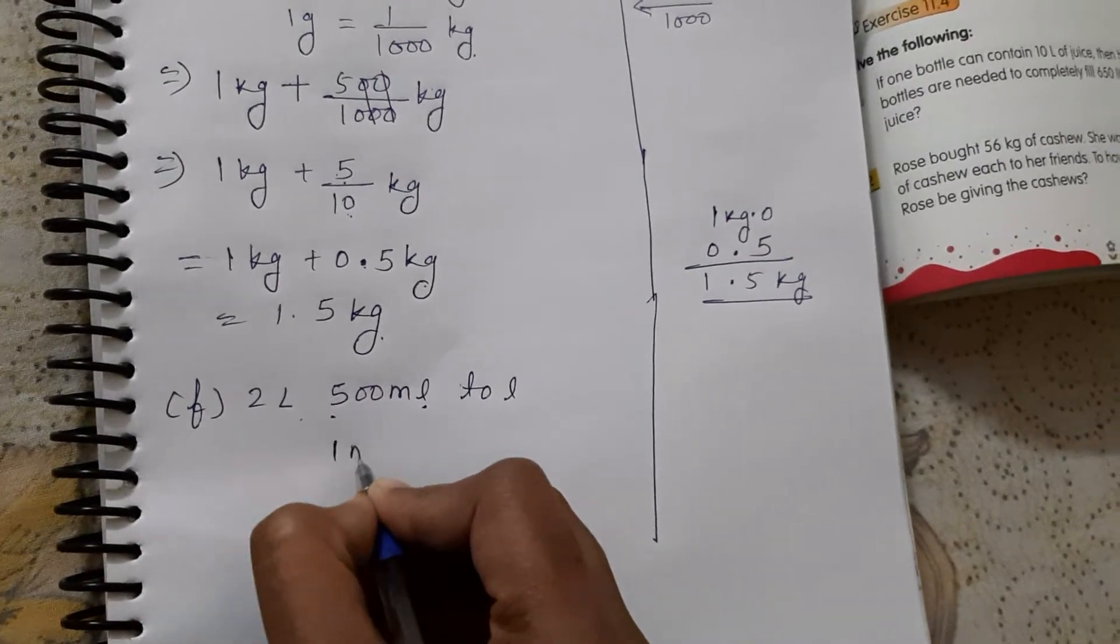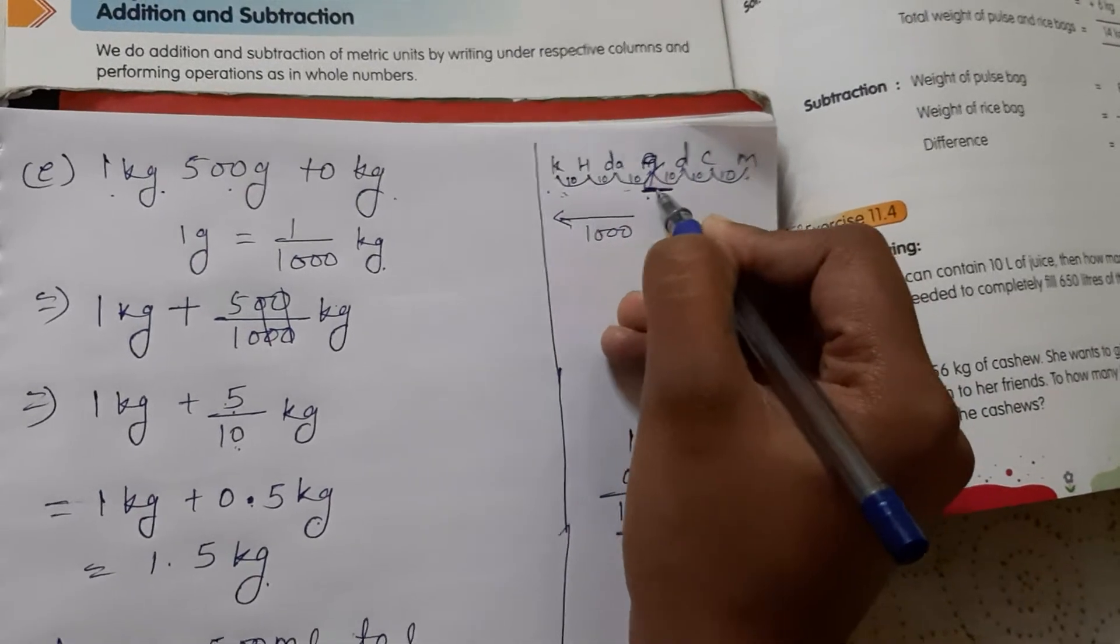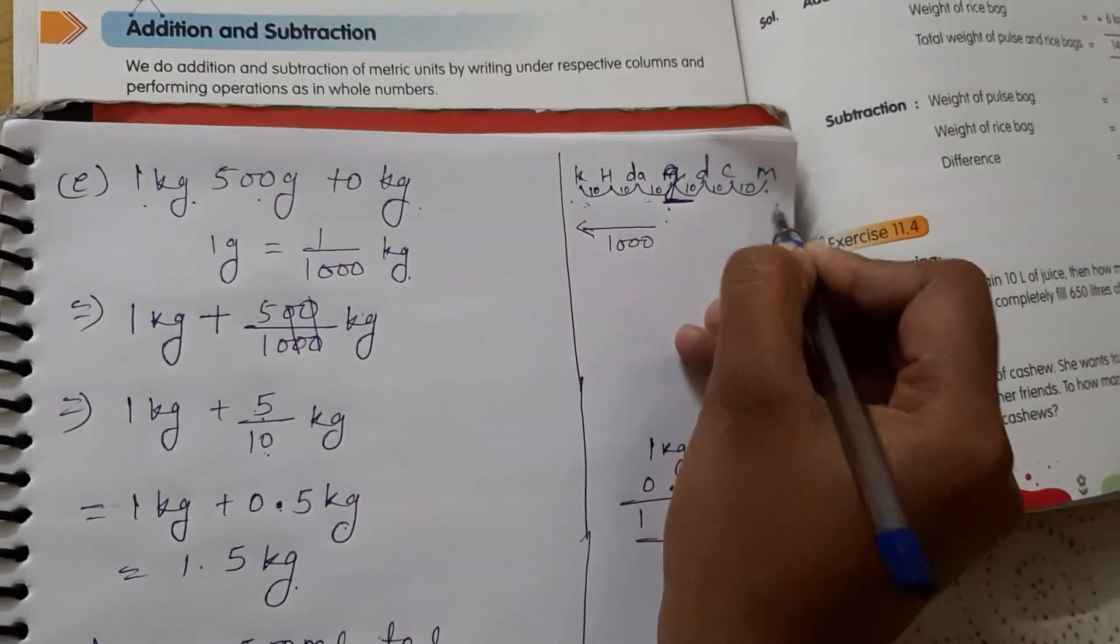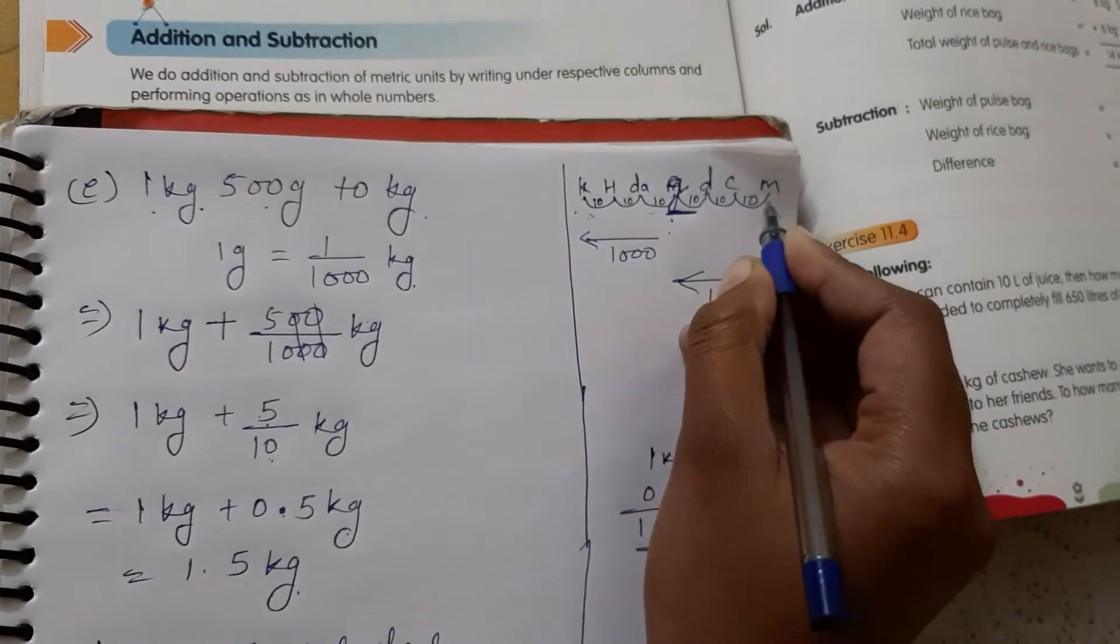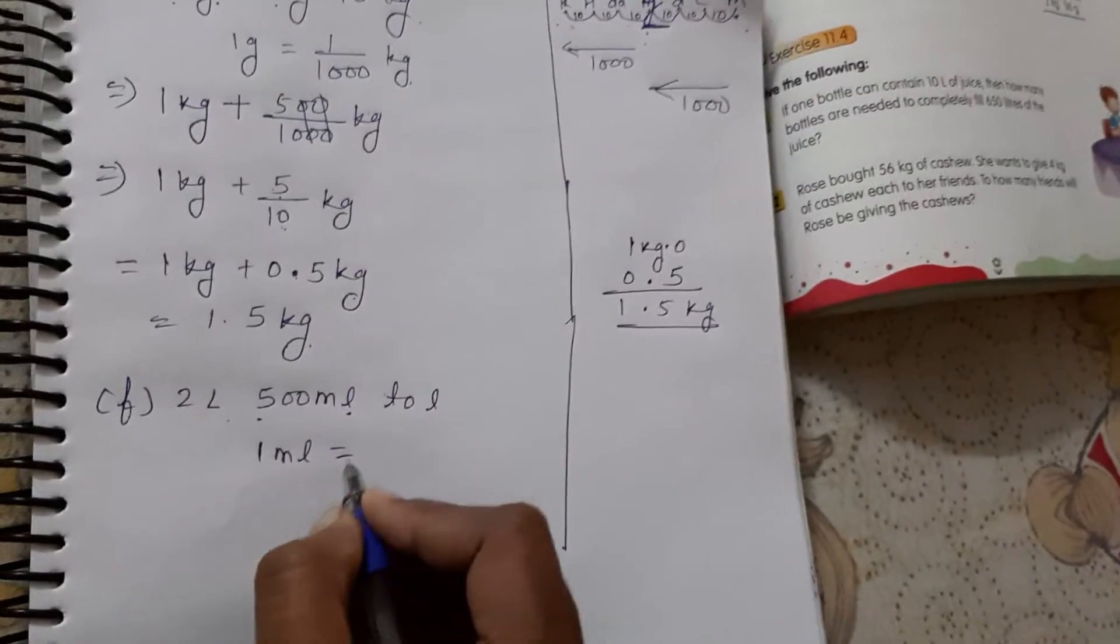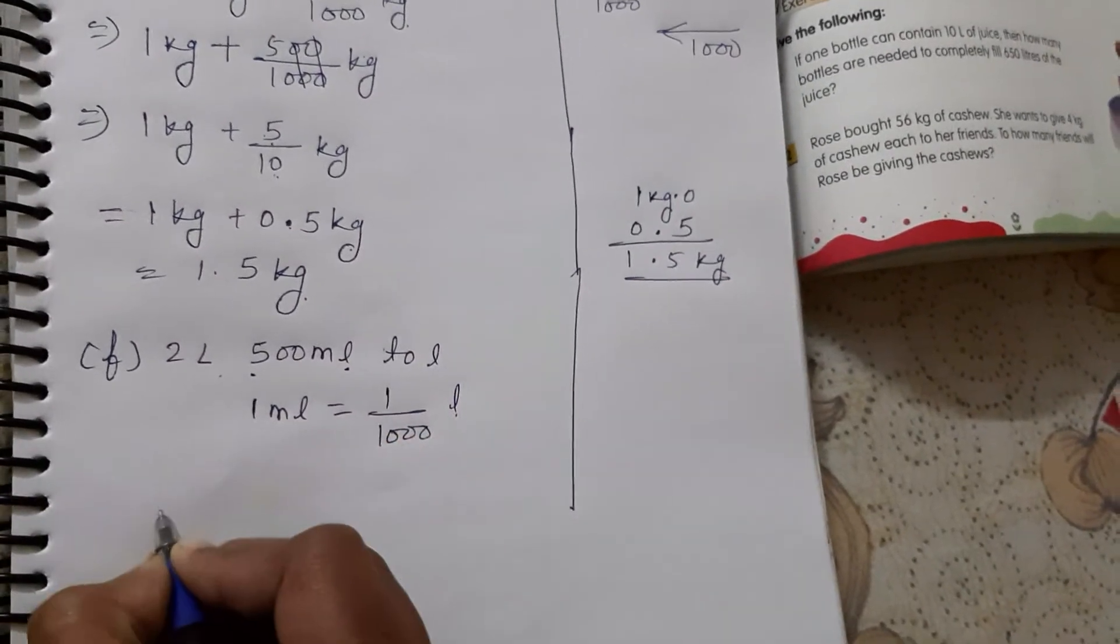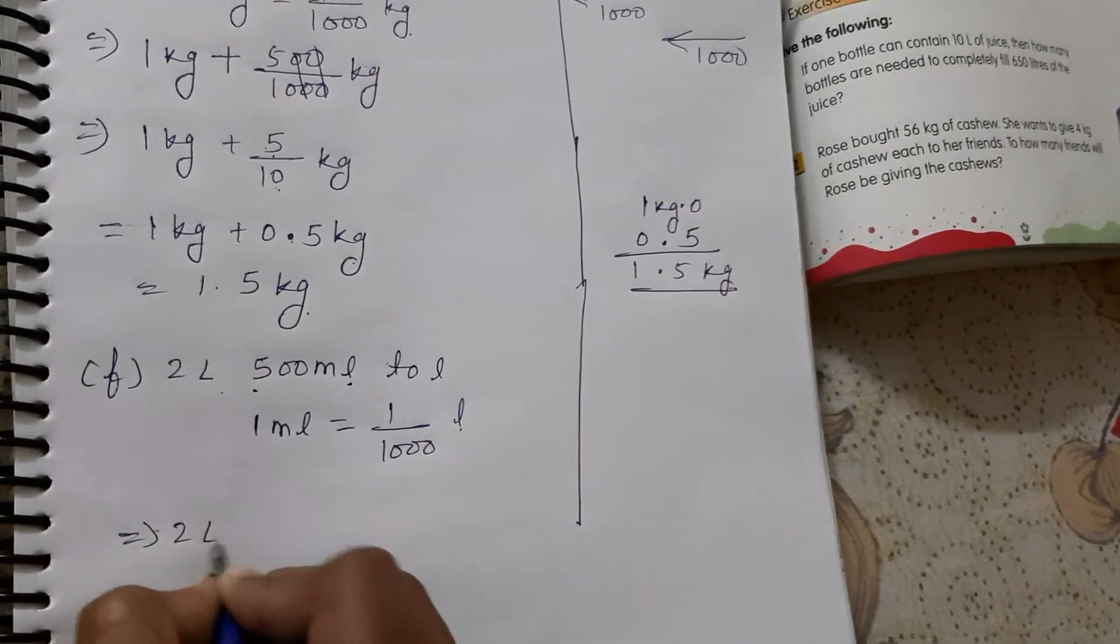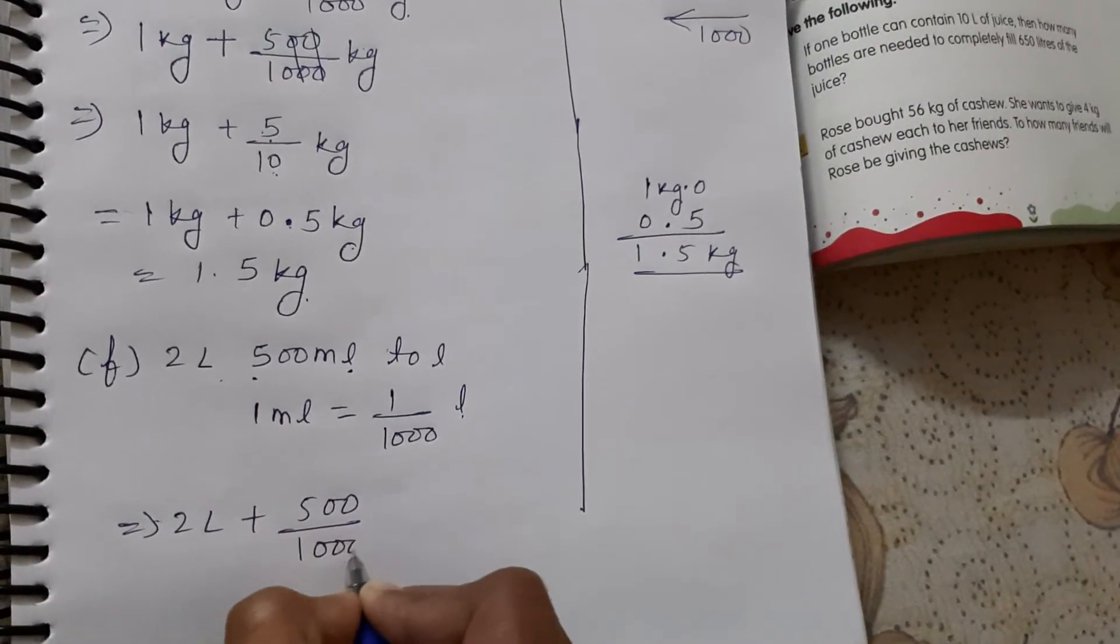So one milliliter, if we check, how much is it? Here is liter, here the basic unit will come. Here is liter and here milliliter. So what do we have to do? We are going in this direction. From milliliter to liter, from basic unit, so we have to divide by 1000. So two liter plus five hundred divided by thousand liter.